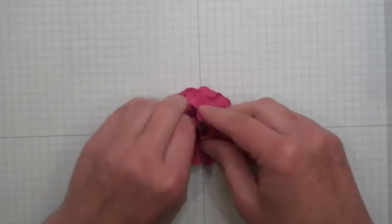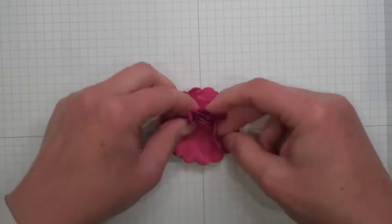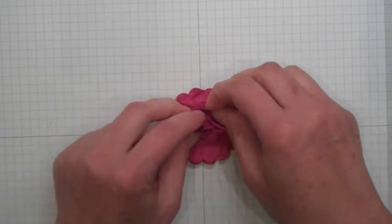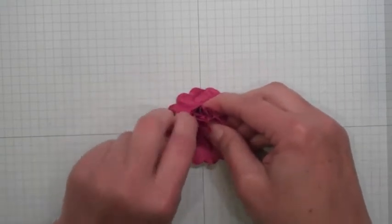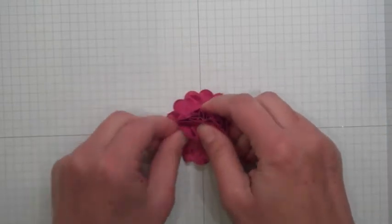Then you're just going to take your petals. We can call them petals now. And you're just going to keep scrunching them into the center, one at a time, until you have all five done. Then you'll play with it.